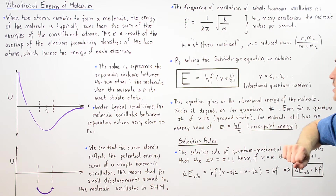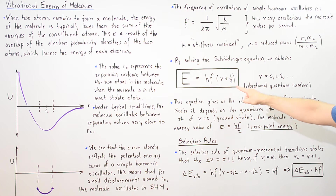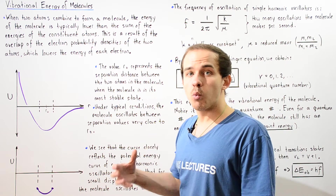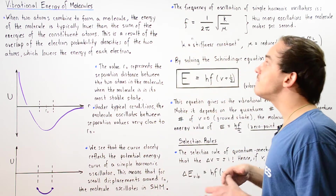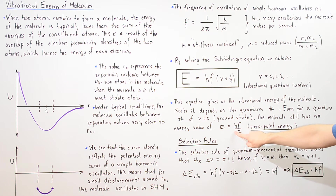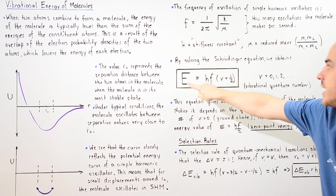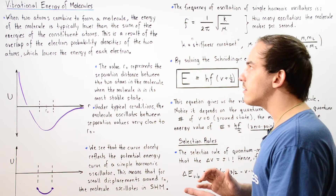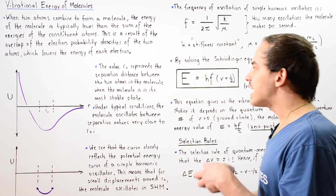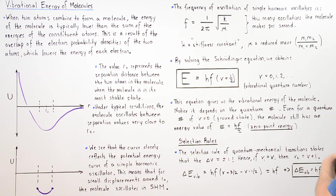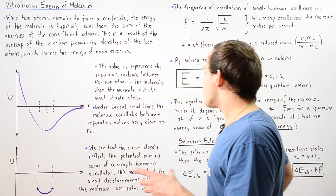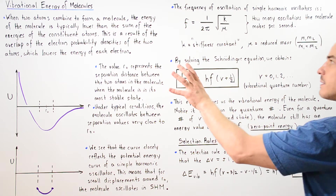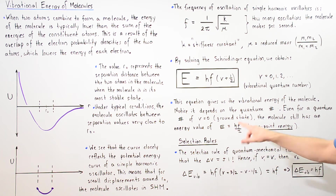Even for a quantum number of V equals zero, which is the ground state, there is still a certain vibrational energy. If V equals zero, then E is simply hf divided by two, and this is known as the zero-point energy. Note that in our discussion of rotational energy, when the quantum state was zero the energy was also zero, but for vibrational energy at quantum state zero, the energy is not zero — it's given by this quantity hf over two.